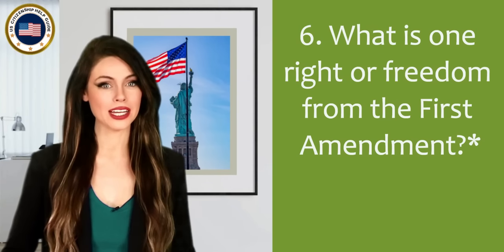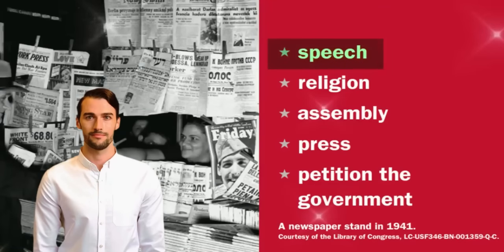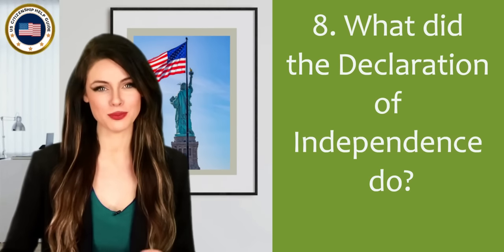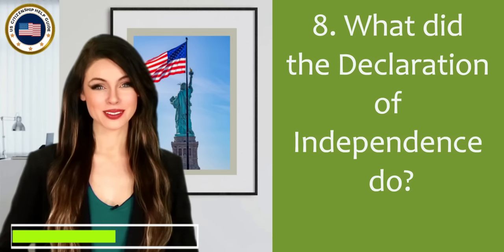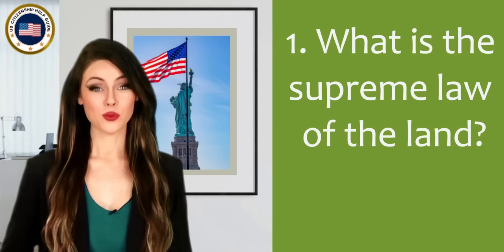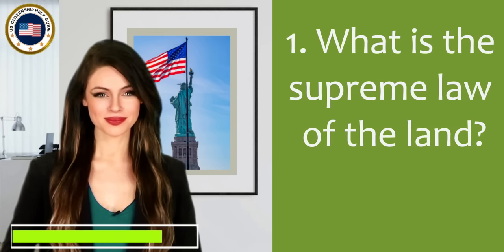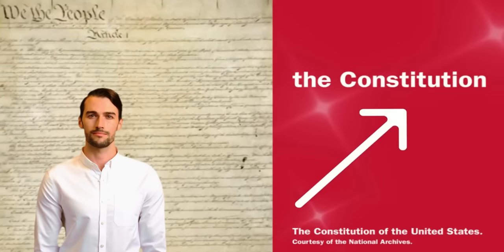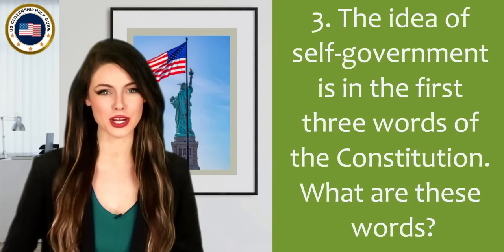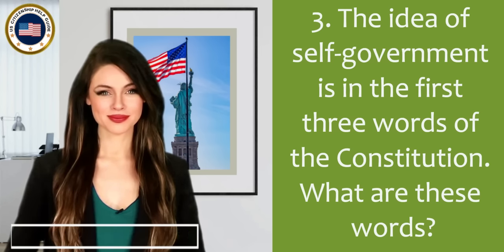What is one right or freedom from the First Amendment? Speech. What did the Declaration of Independence do? Announce the start of independence from Great Britain. What is the supreme law of the land? The Constitution. The idea of self-government is in the first three words of the Constitution. What are these words? We the People.